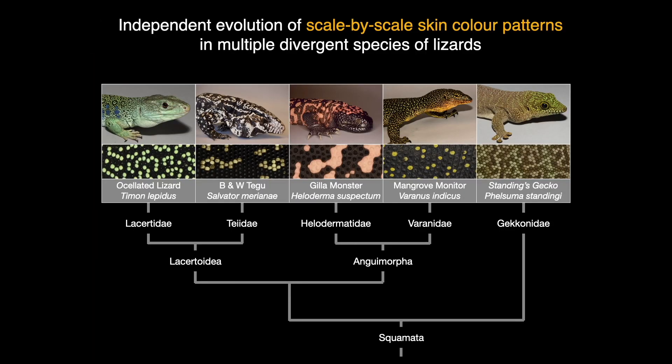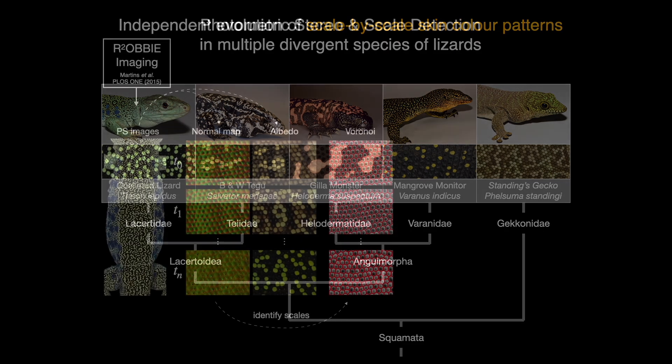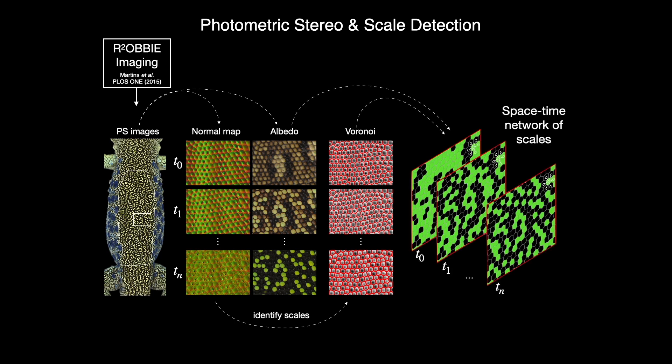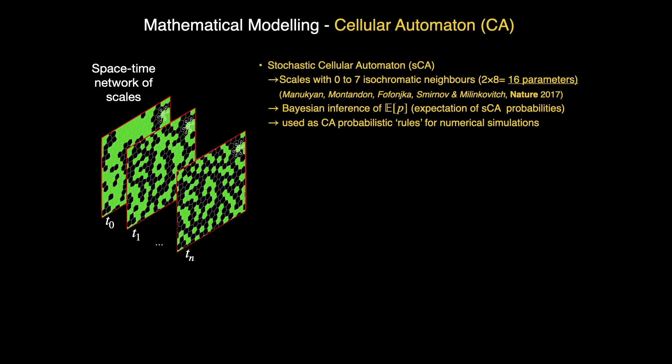The black and white tegu, the gila monster, the mangrove monitor and the standing's day gecko. In several individuals of each species, we match scales across time points and produce a space-time network of scales, which is then used to optimize parameters.